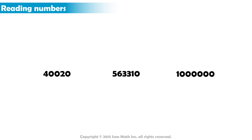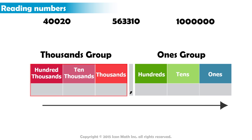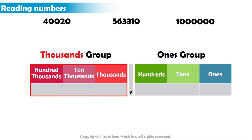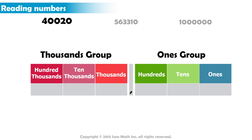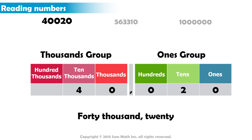Let us now look at the following numbers and try to read them. As mentioned earlier, we start from the left and read the number in the thousands group, followed by the value of the group in singular form. For our first number, we have forty in the thousands group, so we say forty thousand. Then we read the number in the ones group, but we do not say the group's value after the number. Here, we have twenty in the ones group, so we just say twenty. Putting these together, the number reads forty thousand twenty.